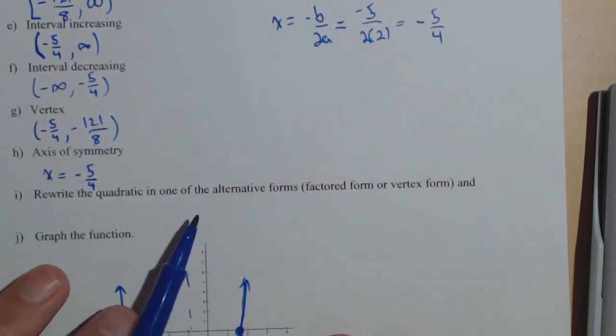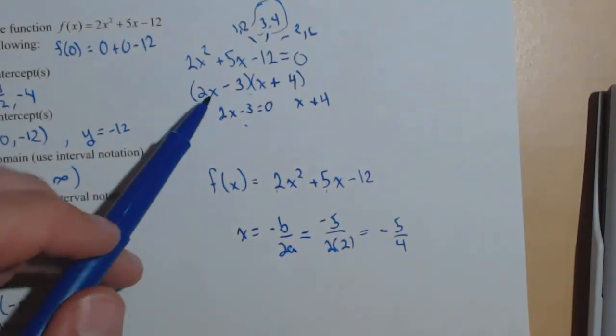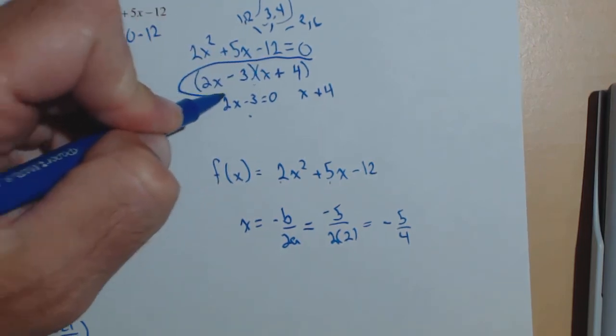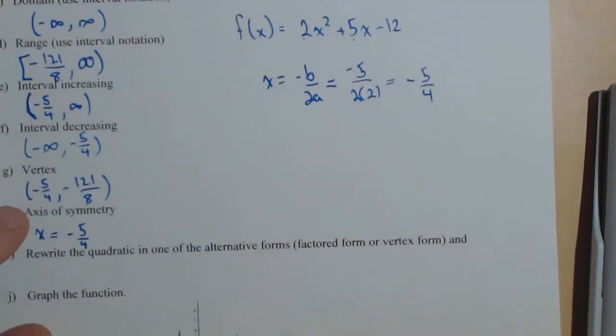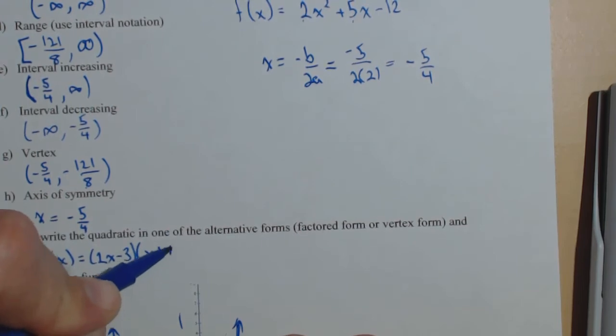We have to write one of the alternative forms, factored form or vertex form. Well we actually already have it in factored form here. We did that to find the zeros. So I'm just going to use that. I'll also write it in vertex form for the answer key. So 2x minus 3 times x plus 4.